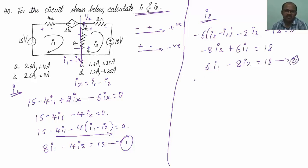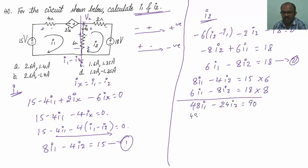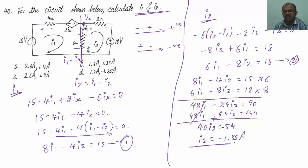Using simultaneous equations: equation 1 is 8I1 minus 4I2 equals 15, and equation 2 is 6I1 minus 8I2 equals 18. Multiplying equation 1 by 6 and equation 2 by 8 gives: 48I1 minus 24I2 equals 90, and 48I1 minus 64I2 equals 144. Subtracting, I will be getting 40 times of I2 equals 54, so I2 equals minus 1.35 amperes.